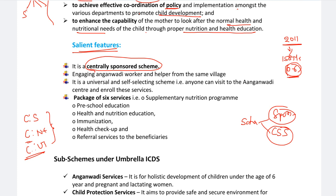And engaging the anganvadi workers and helpers from the same village. ICDS umbrella program lo unna sub-schemes - anganvadi services, child protection services, SAG, adolescent girls scheme - vanni kuda deliver avutayi using anganvadi workers. And it is a universal and self-selecting scheme - that is, anyone can visit the anganvadi center and enroll for these services. The services under ICDS are: supplementary nutrition program, preschool education, health and nutrition education, immunization, health checkups.